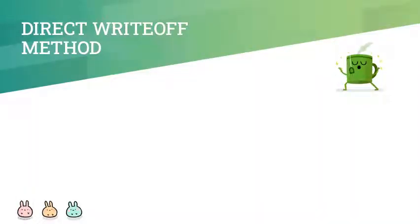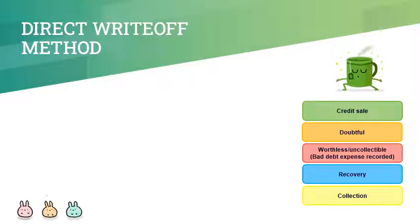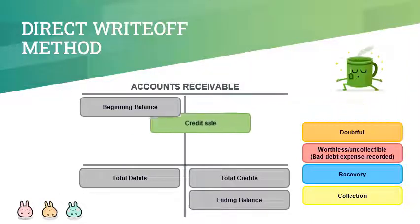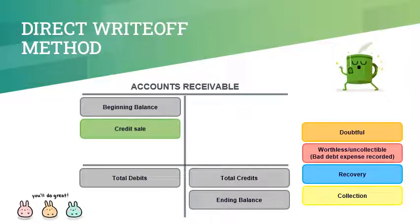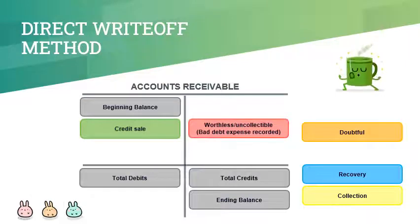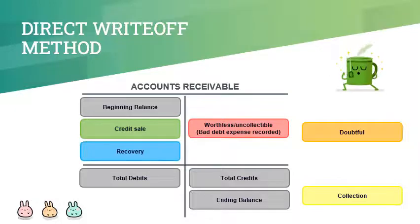In solving problems, it is important to know how transactions affect the balances of relevant accounts. Under the direct write-off method, we only have one balance sheet account which is accounts receivable. Credit sale increases the accounts receivable balance. When accounts become doubtful, there is no entry and so there is no effect. The entry to recognize bad debt expense and to write-off worthless or uncollectible accounts results in a decrease in accounts receivable. Recovery of previously written-off accounts increases the balance, and the collection of accounts decreases it.